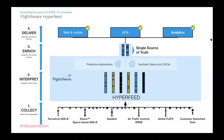We take all that data and then we interpret it using something called our hyperfeed engine, seen in the middle of the slide. For context, we're assessing some 10,000 aircraft position messages a second in the hyperfeed engine. Hyperfeed uses machine learning and algorithms to determine what we can take as trusted data, and it rules out anything it determines as erroneous data. The end result is the most accurate and comprehensive data in the world, becoming trusted as a single source of truth for what's happening in the aviation industry.